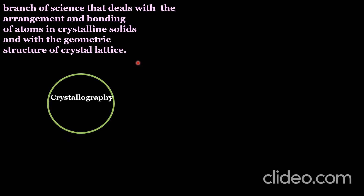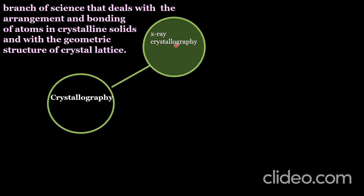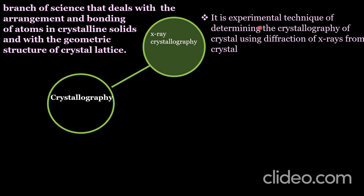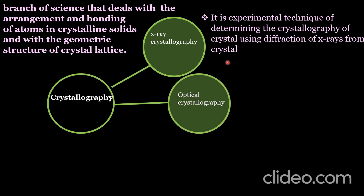Crystallography can be divided into X-ray crystallography. X-ray crystallography is the experimental technique of determining the crystallography of the crystal using the diffraction of X-rays from crystal. Then there is another branch called optical crystallography, which deals with the study of crystals using polarized light.